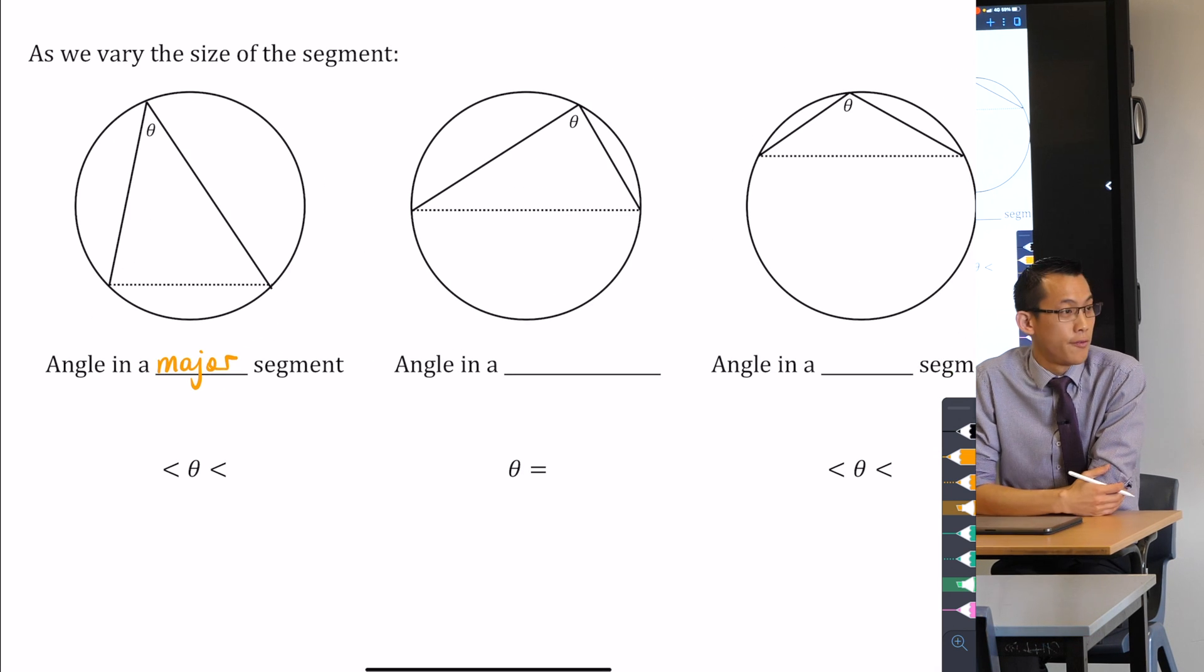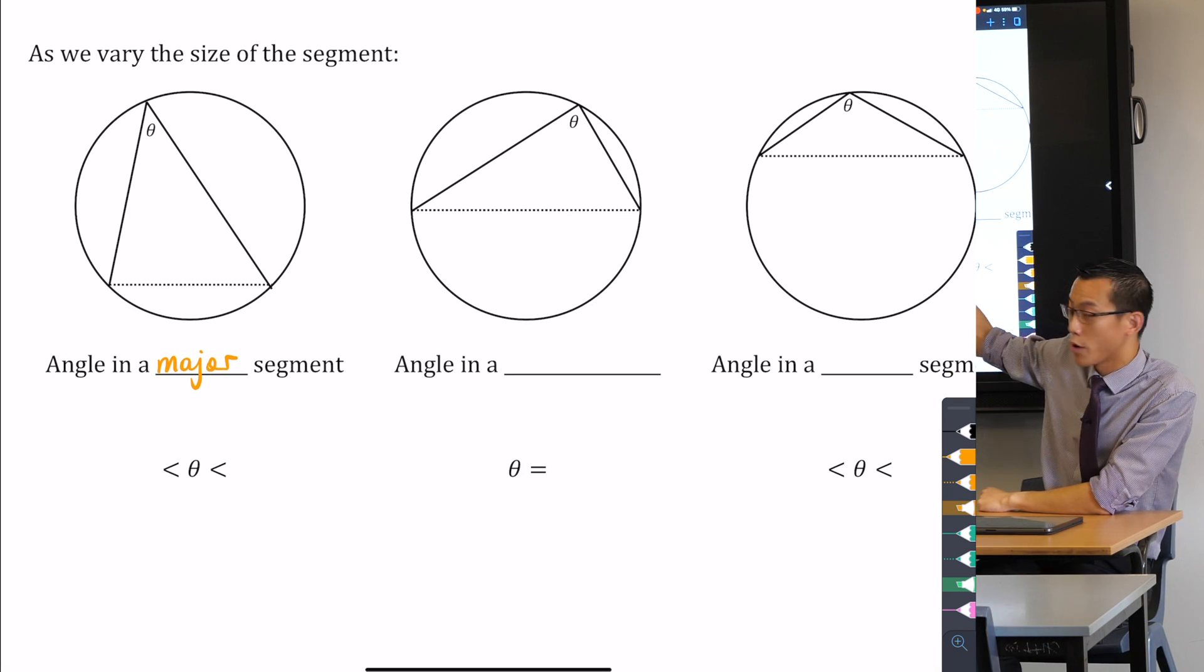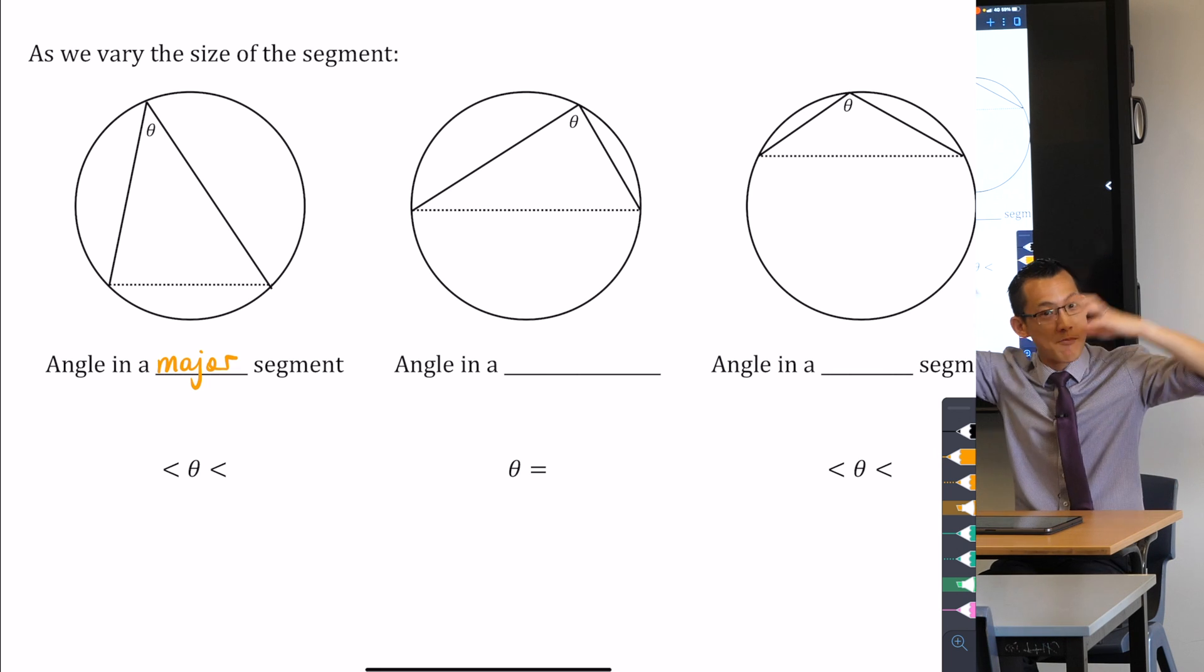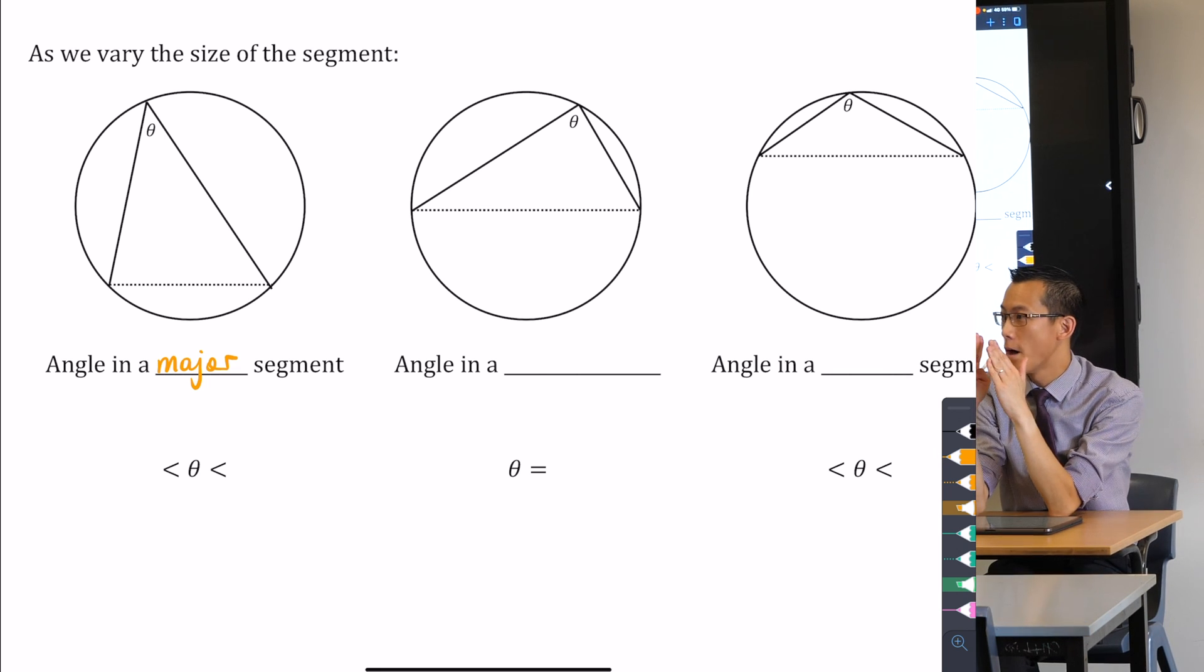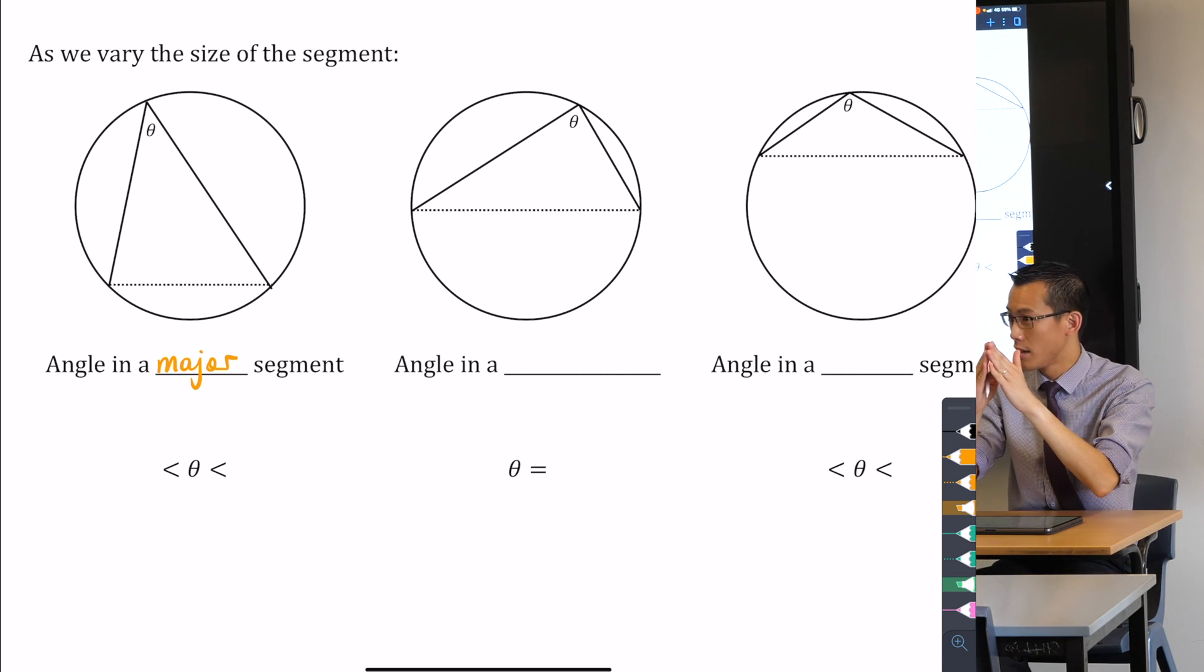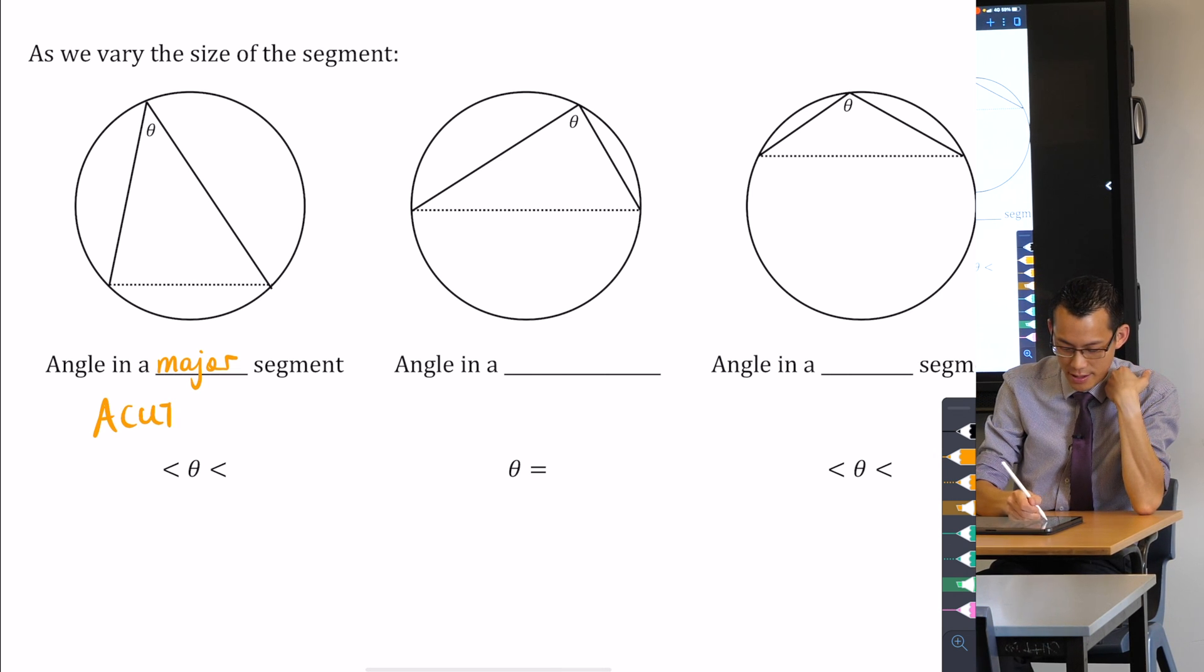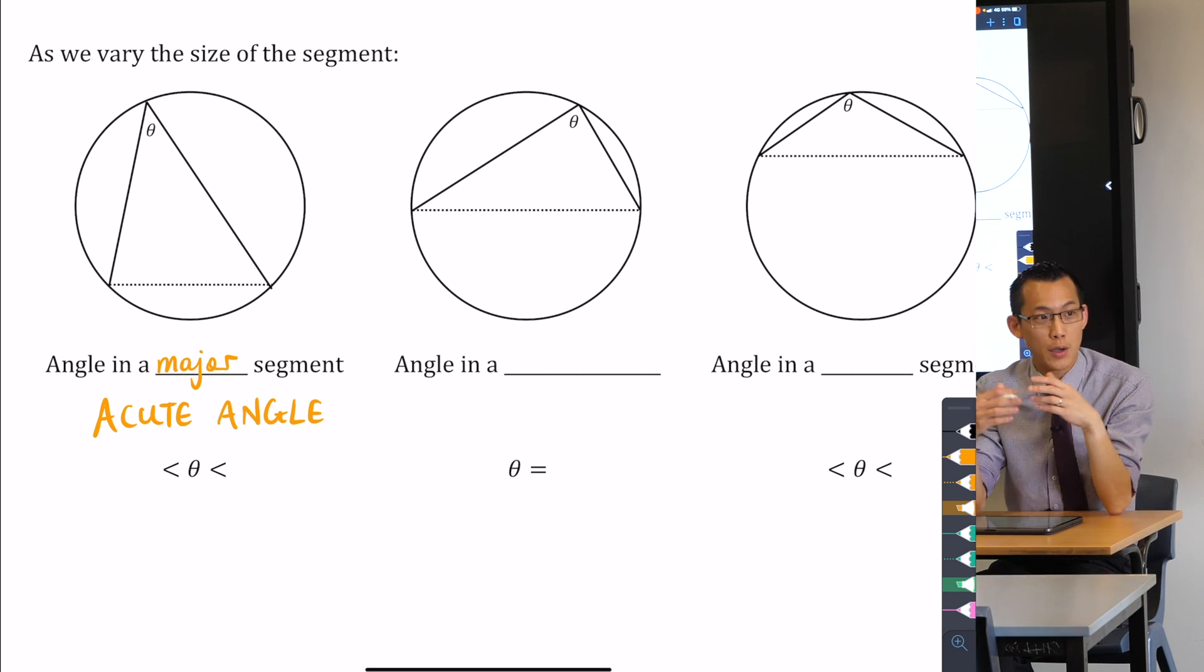Now have a look at the various sizes of theta as you go from left to right. Even though theta could be a variety of different angles, if that segment up the top is a major segment, what can you tell me about the size of theta? It's sharp, isn't it? So it's an acute angle. That's why we say if you have acute pain, it's a sharp pain. So if you have a major segment, you must have an acute angle. In other words, theta is between 0 and pi on 2.